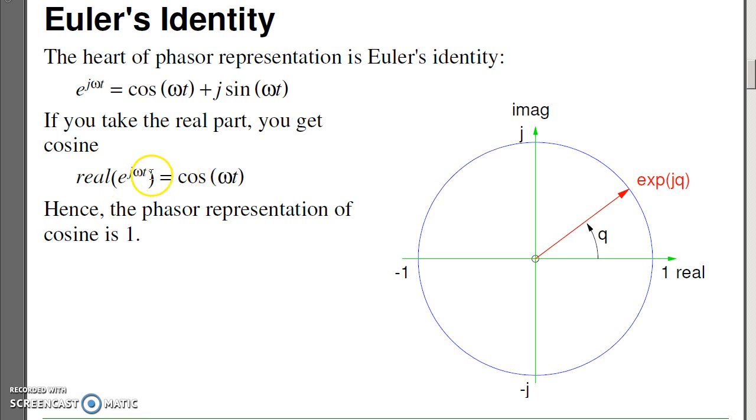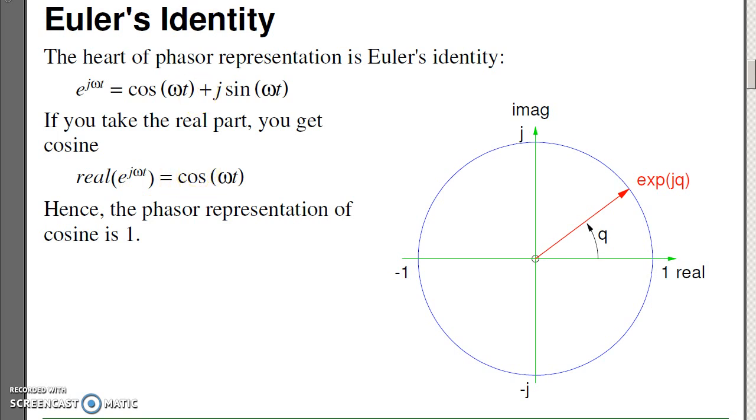Likewise, the number one, one times e to the j omega t means one times cosine. If I want to represent both sine and cosine, what I do is take my complex exponential, multiply by a plus jb. Doing some algebra, what you wind up with is the real part of a plus jb times complex exponential is a cosine omega t minus b sine omega t. That's the phasor representation for sine wave. The real part means cosine. Minus j means sine.